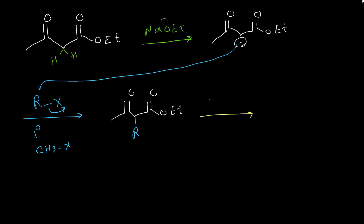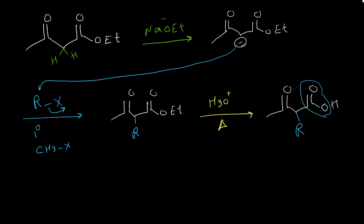By hydrolysis of this ester under acidic conditions and high temperature, this ester group converts to the carboxylic acid, but like malonic ester synthesis, it leaves the structure as carbon dioxide. This compound is not stable under hydrolysis conditions — CO2 leaves and we eventually have an acetone with an alkyl group on the alpha carbon. So this method is for synthesis of methyl ketones or acetone derivatives.